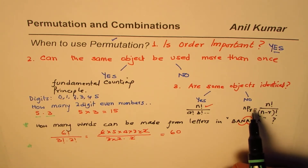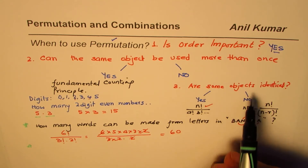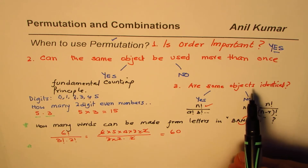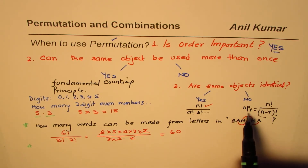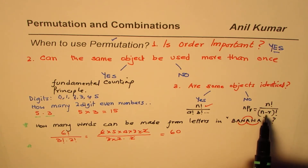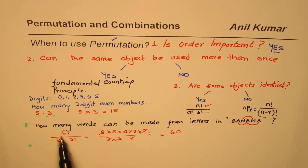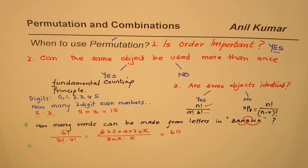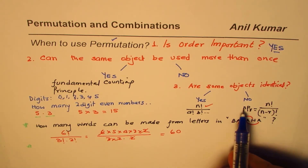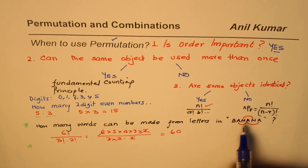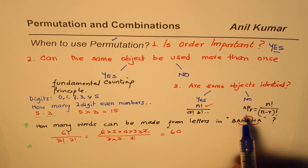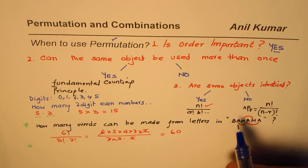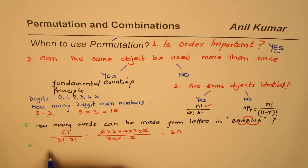Now let me take an example where no objects are identical. In that case we use the formula nPr, which means n factorial over (n minus r) factorial. There are actually two sub-cases for nPr: one where we select all the items, and one where we select only some of the items.